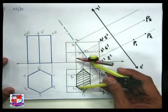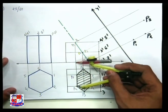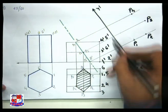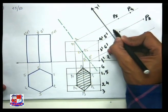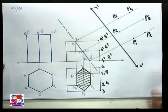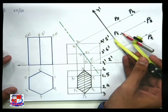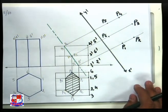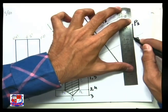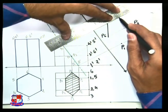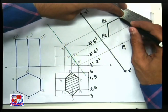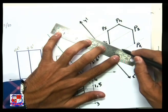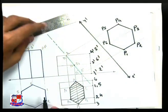Similarly, point P4: measure the distance of P4 from the XY line and mark it. Then point P5 and point P6 can be located with the same method — measure the distance from P6 to the XY line, put an arc, and here is point P6. As it is a hexagonal prism with straight faces, join all points P1, P2, P3, P4 with straight lines. There is no curvature as it is a linear solid and the cutting plane is also not curved. Join all points with straight lines — this is the true shape of the section.